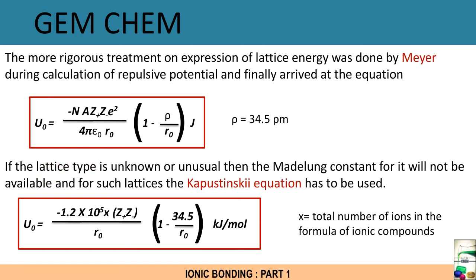Now what is the usefulness or importance of Kapustinskii equation in deriving the lattice energy? If the lattice type is unknown or unusual, then the Madelung constant for it will not be available, and for such lattices the Kapustinskii equation has to be used. Here U₀ = -1.2×10⁵ × x(Z+Z-)/r₀ × (1 - 34.5/r₀) kilojoule per mole, where x equals total number of ions in the formula of ionic compound. What does it mean? Suppose we have NaCl, so number of ions is 2, so x will be 2.